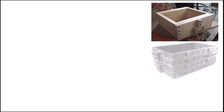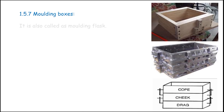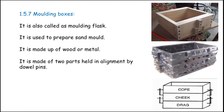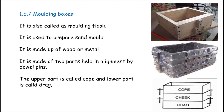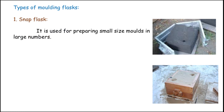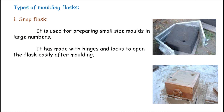The next topic is the molding box, also called the molding flask. It is used to hold the sand mold and is made of wood or metal. It is made of two parts held in alignment by dowel pins. The upper part is called the cope and the lower part is called the drag. If there are three boxes, the middle one is called the cheek. There are two types of molding flasks. The first is the snap flask, used for preparing small-size molds in large numbers — it has hinges and locks to open the flask easily after molding.